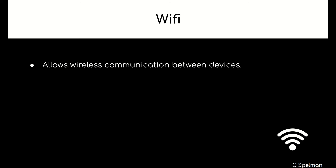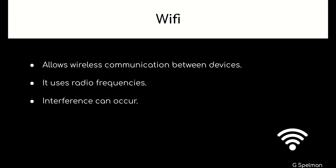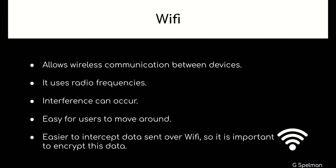Wi-Fi allows wireless communication between devices. It uses radio frequencies. Interference can occur. It's easy for users to move around. It's easier to intercept data sent over Wi-Fi, so it is important to encrypt this data.